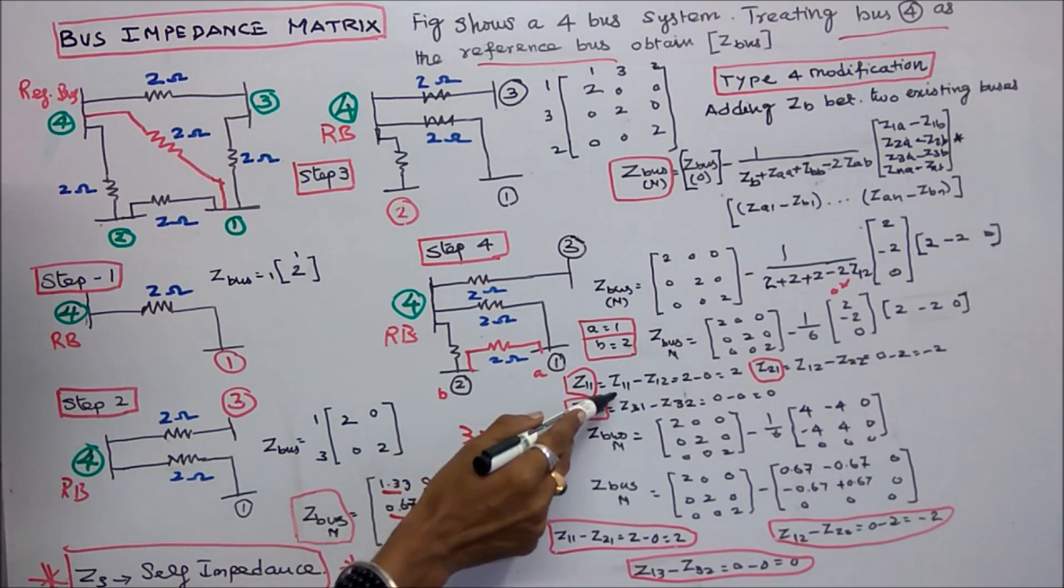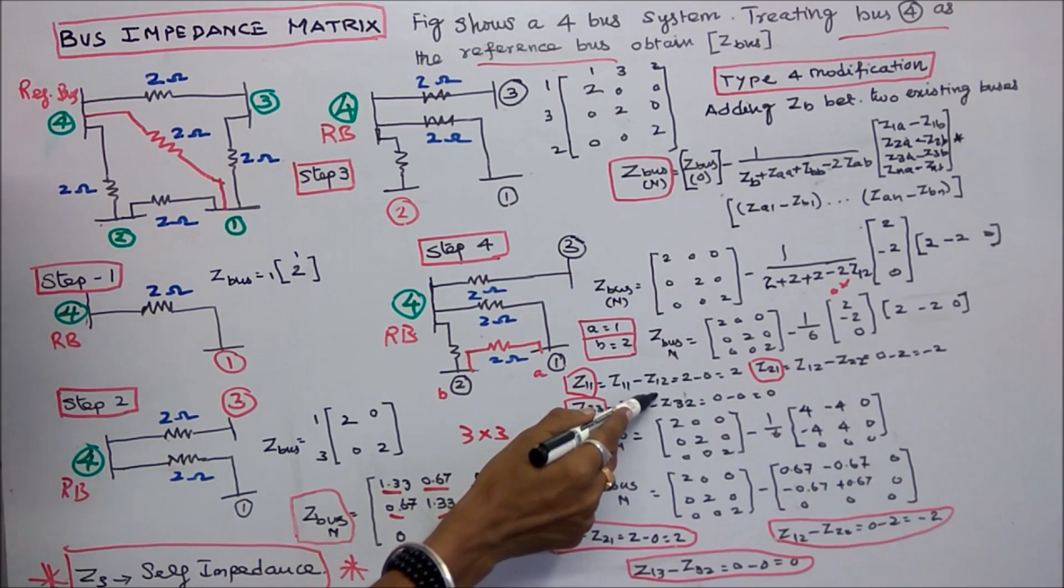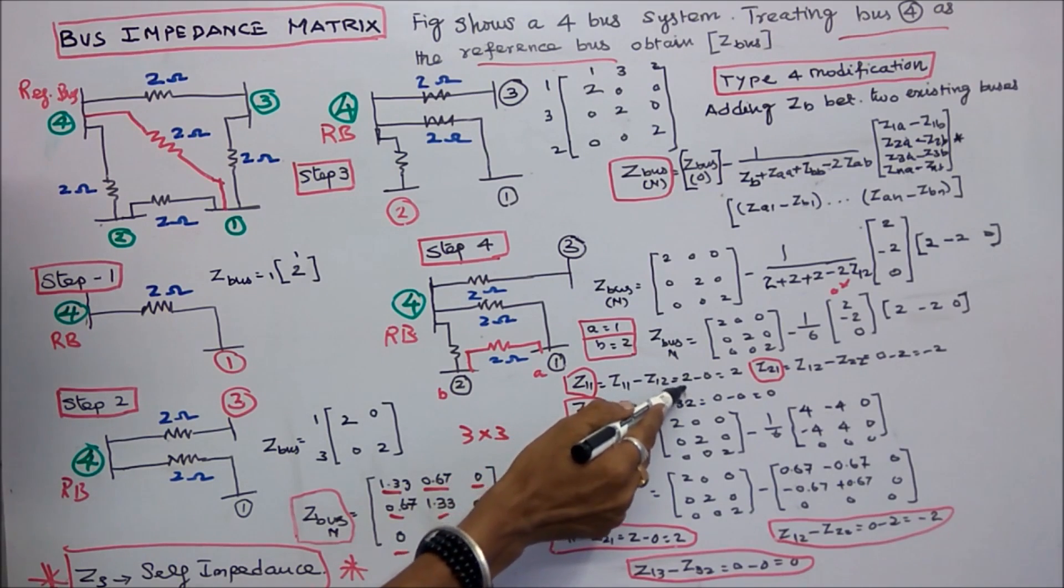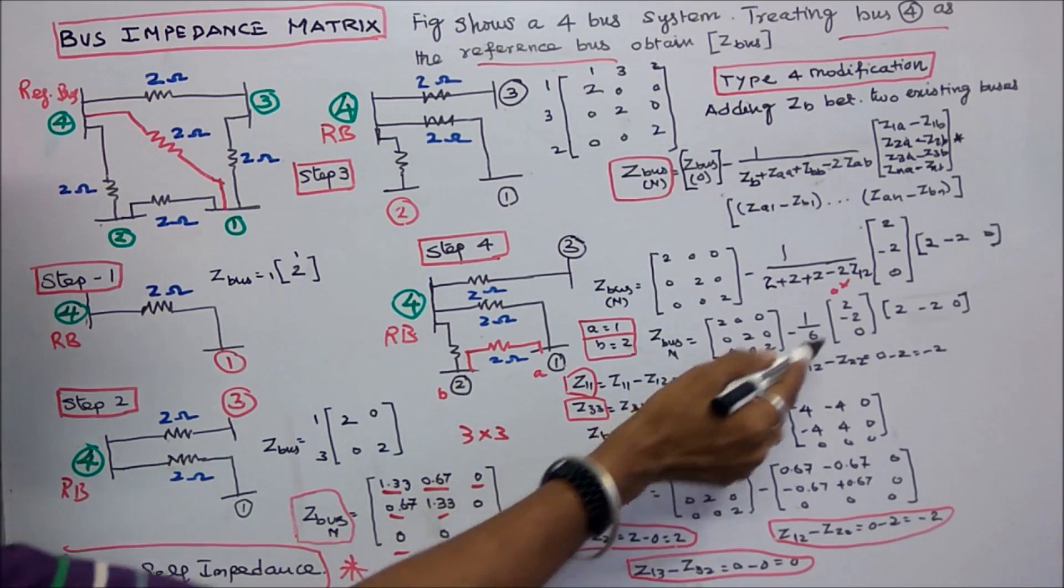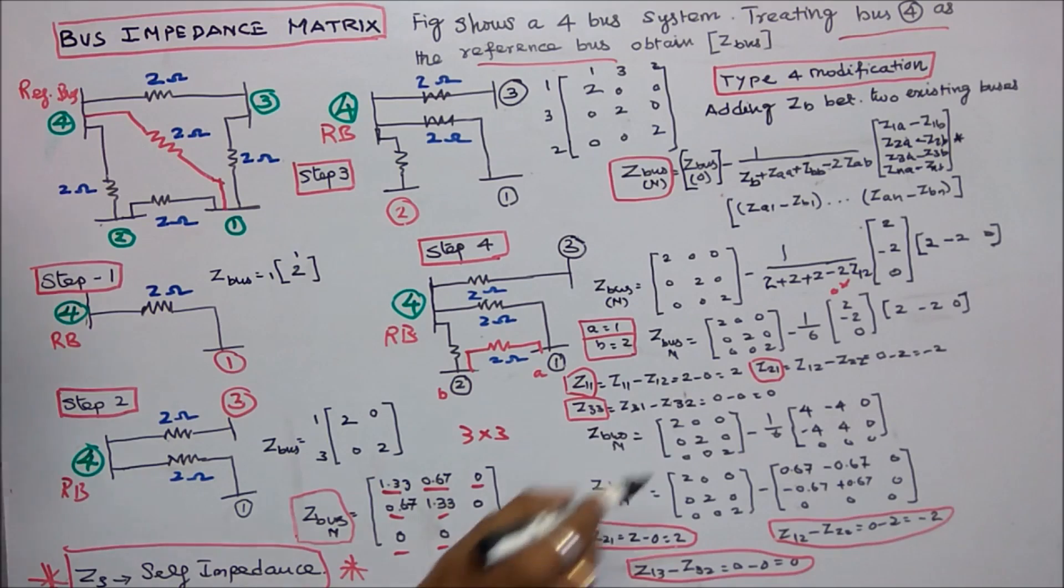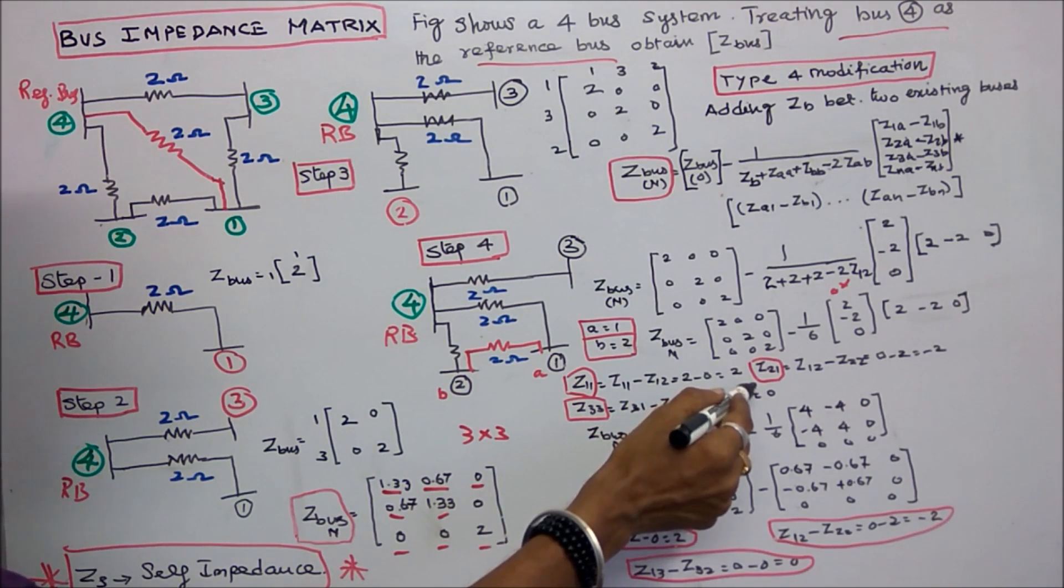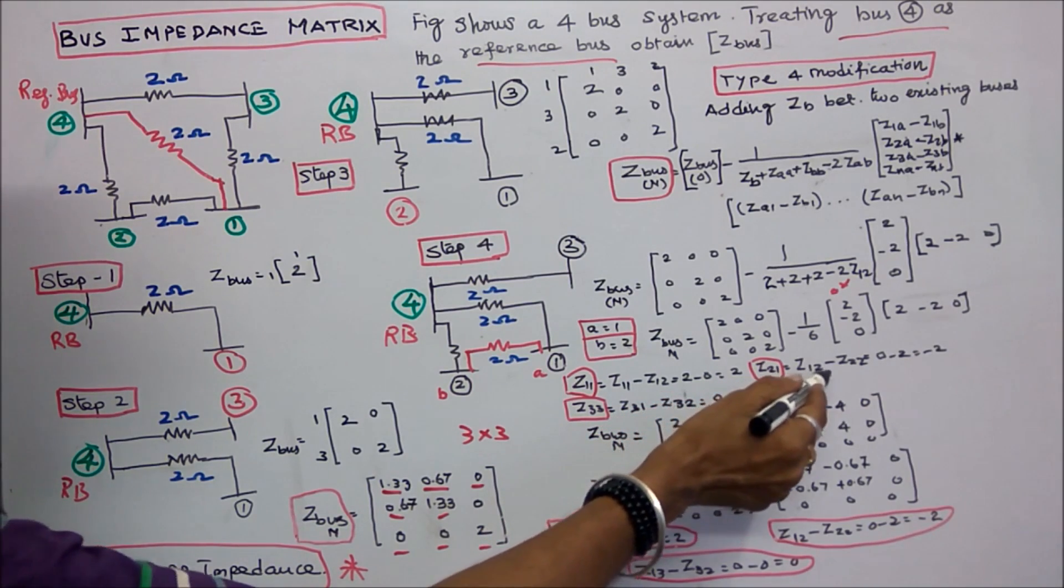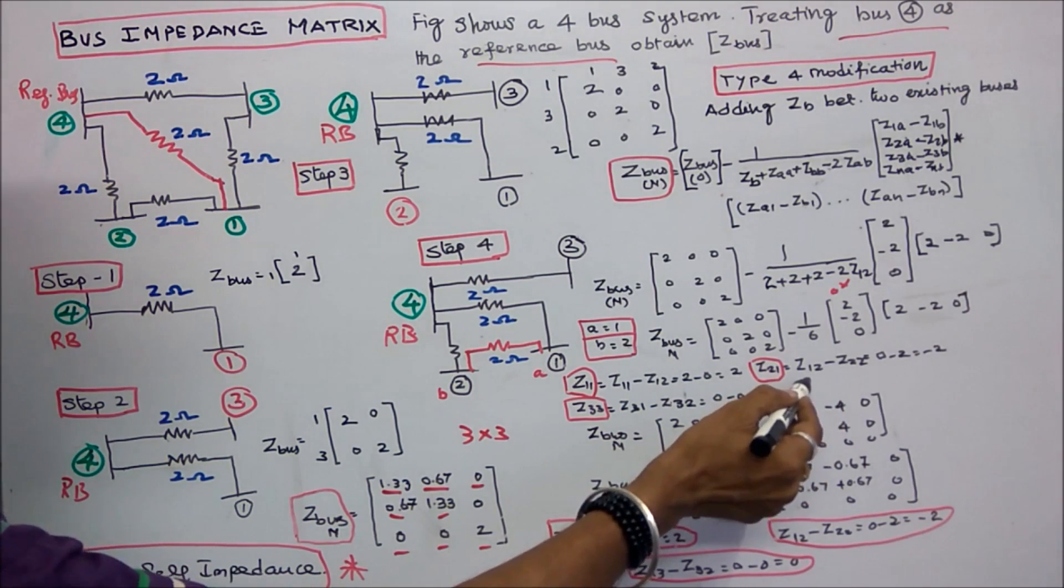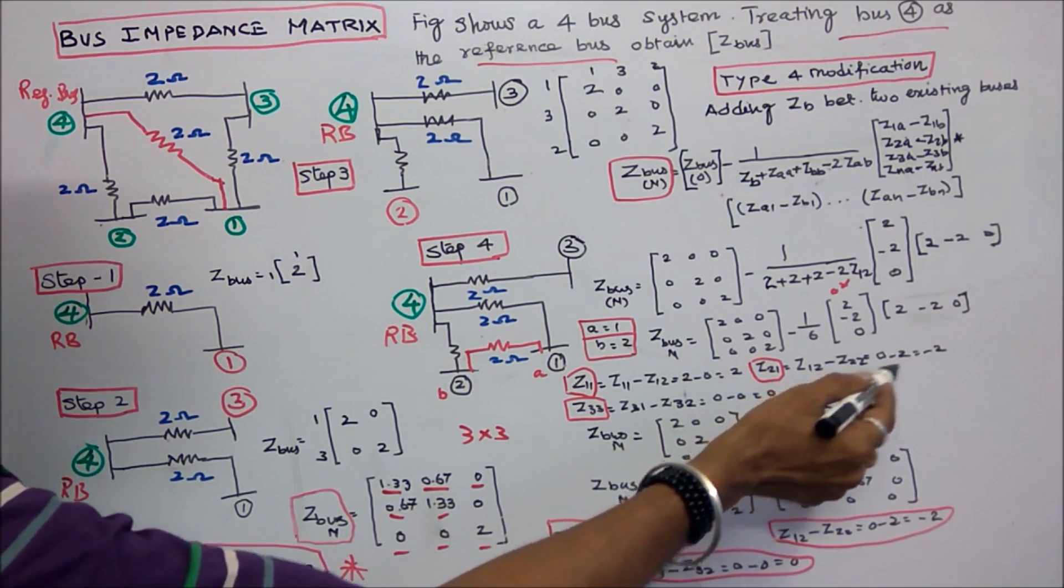Z11 is equal to 2. Z12 is equal to 0, therefore Z11 is equal to 2. This is 2. Z21 is equal to Z12 minus Z22. Here Z12 is equal to 0, Z22 is equal to 2.